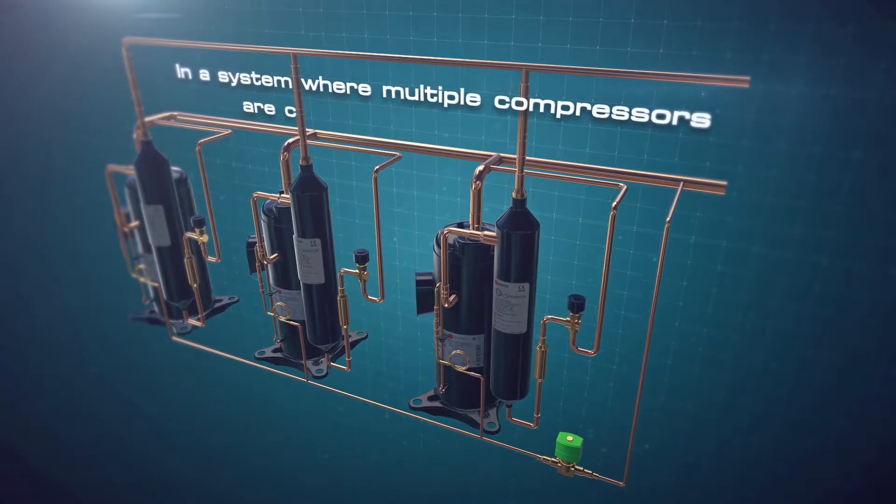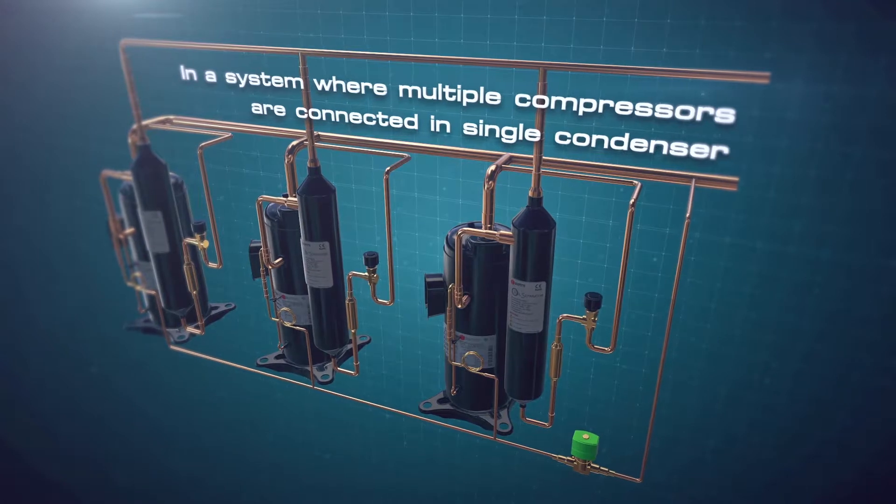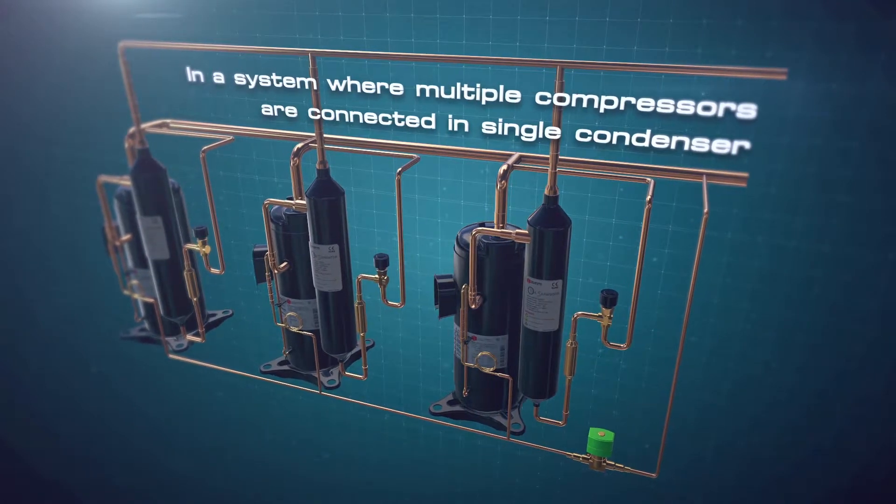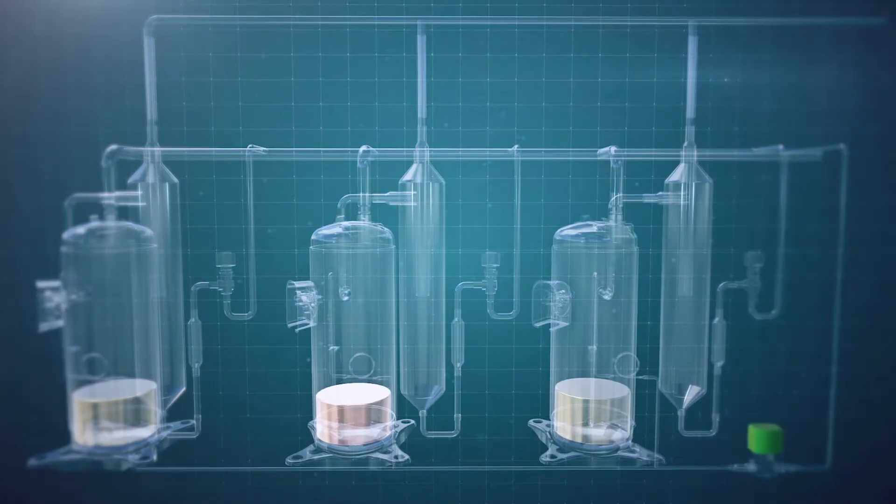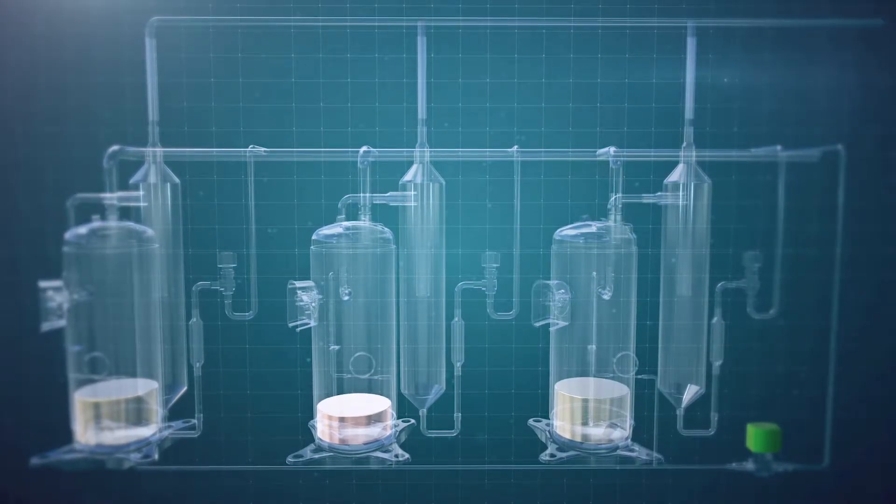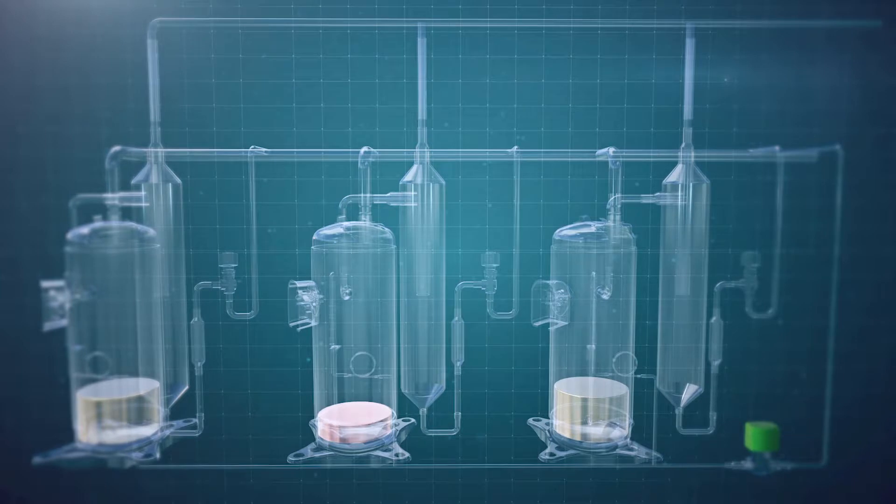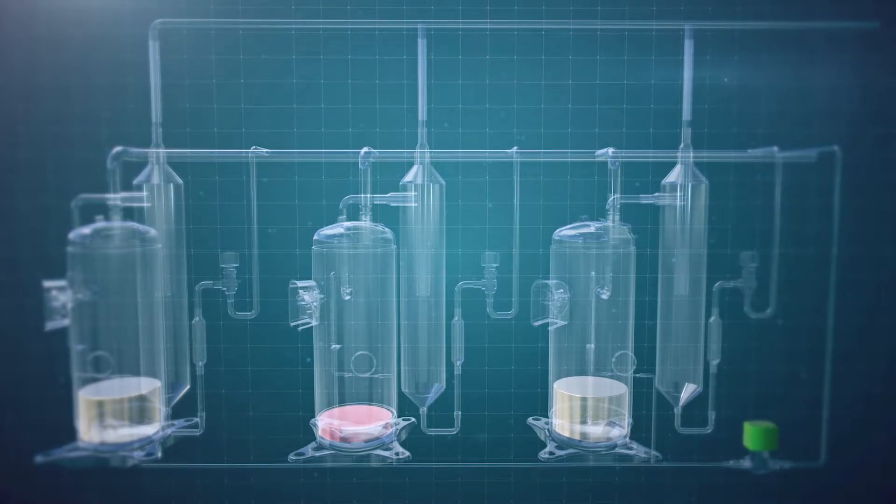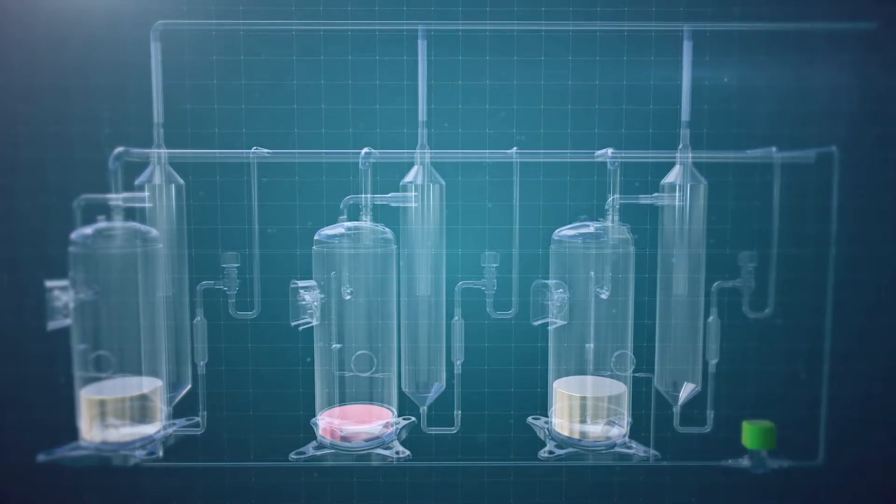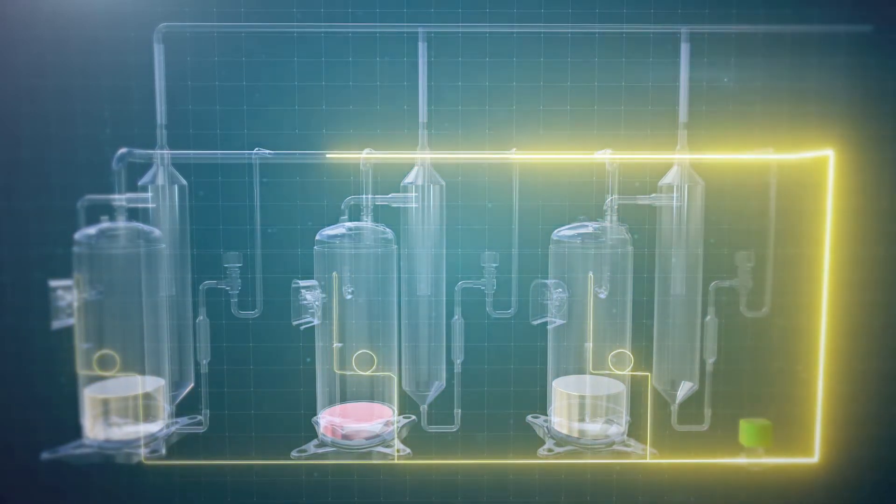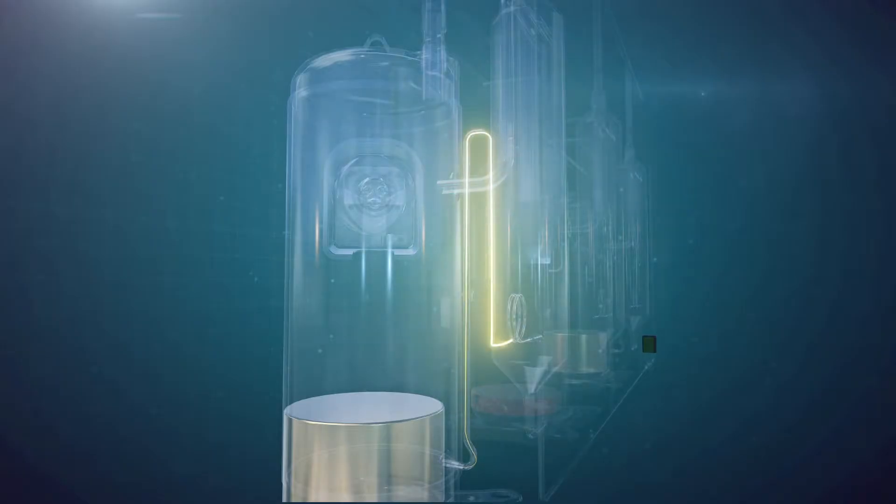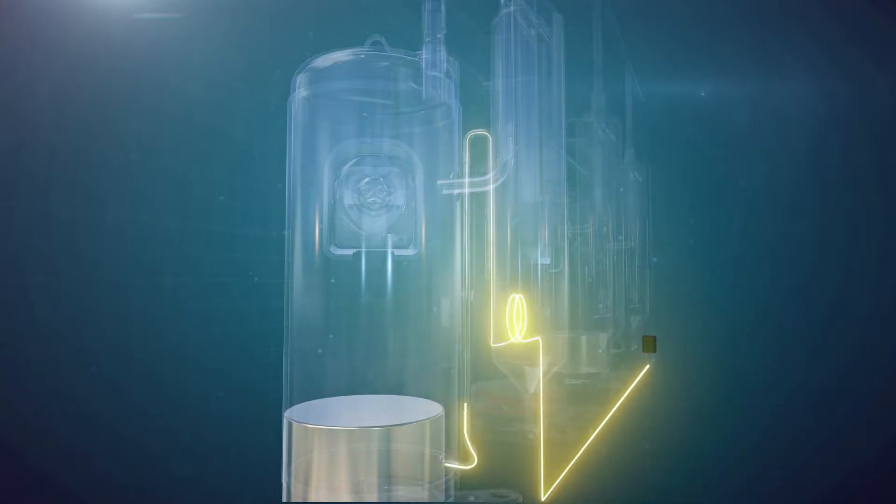In a system where multiple compressors are connected in single condenser, the connection plan is as shown. Due to multiple compressors working simultaneously, the oil level in some compressors are prone to be lower than the optimal level. The oil balance technique manages the oil level by regulating the solenoid valve openings in a timely manner to keep the oil level of all compressors at optimum.